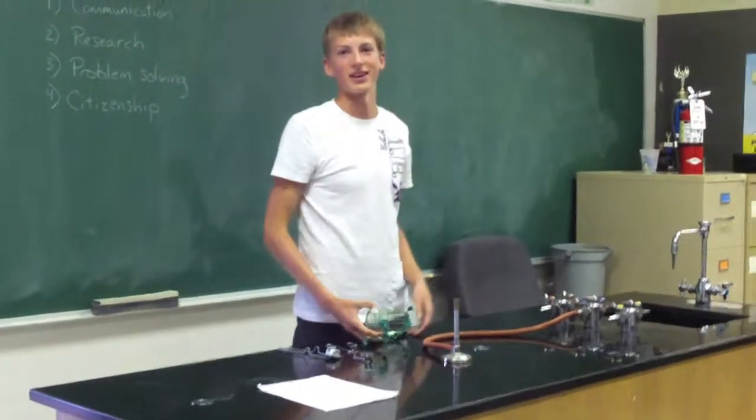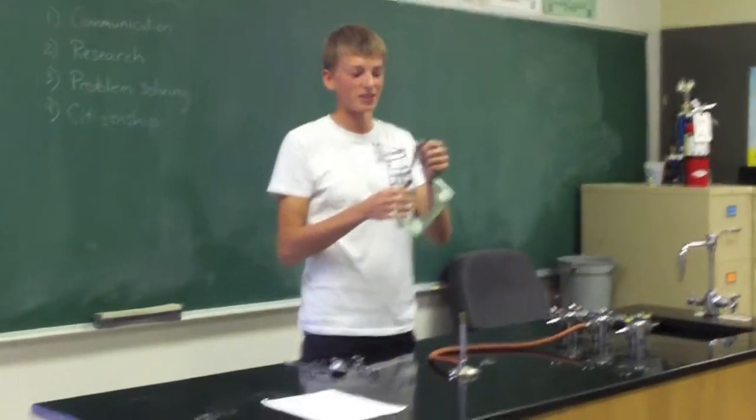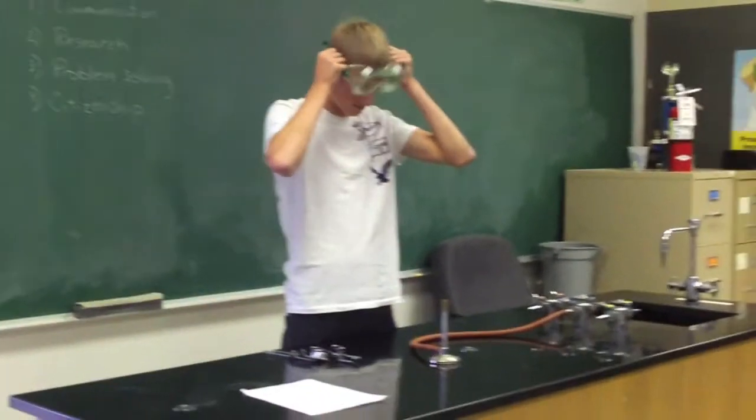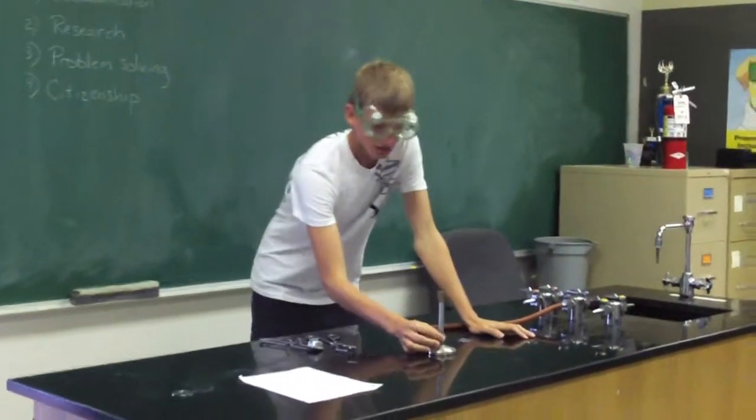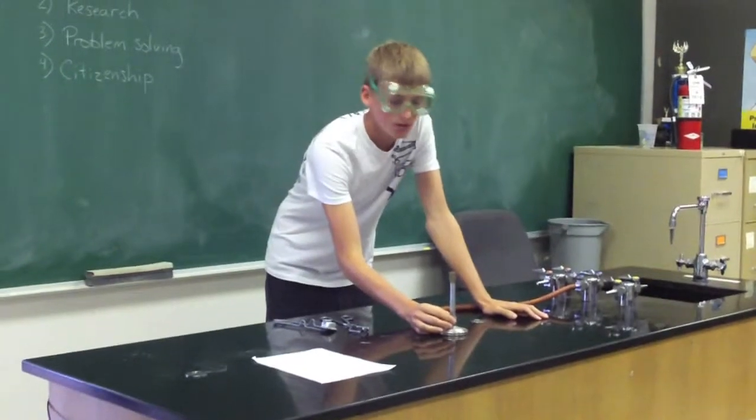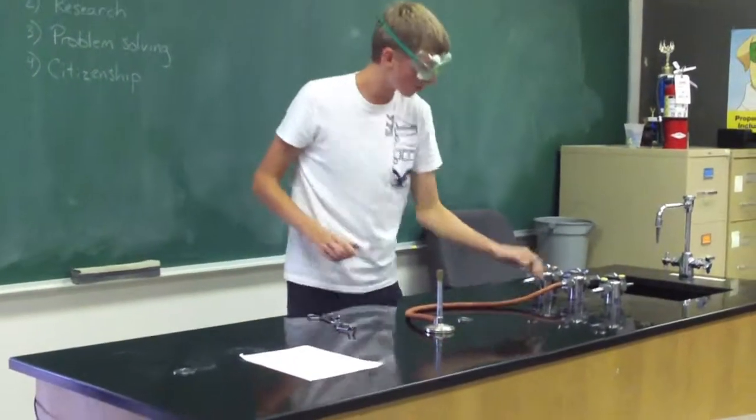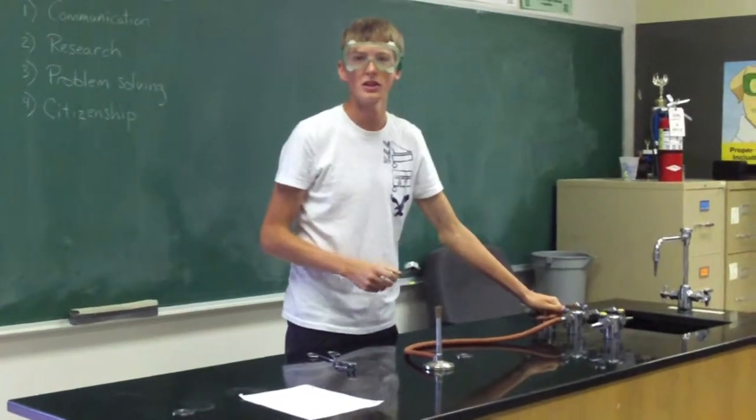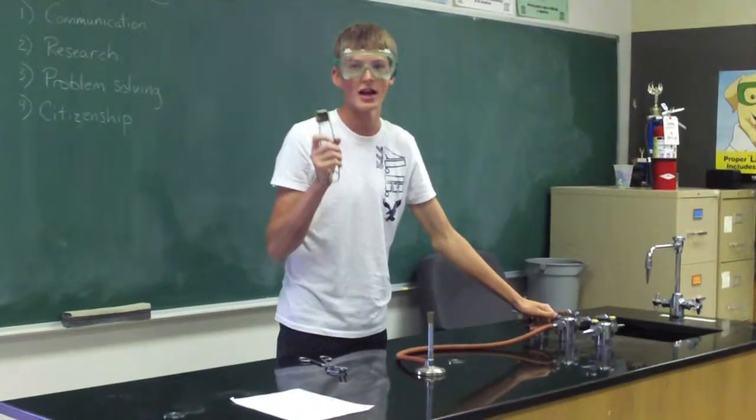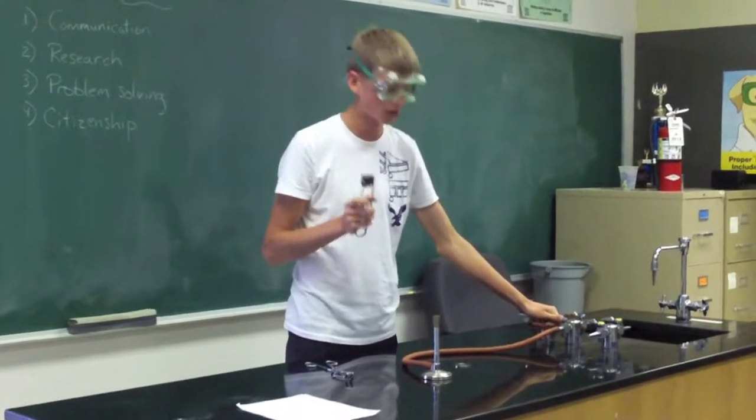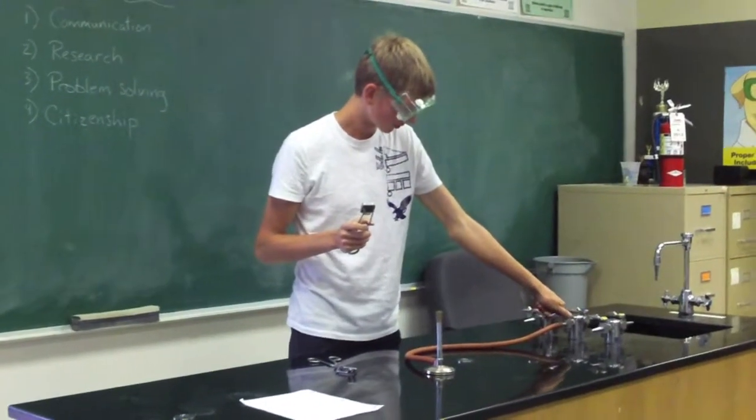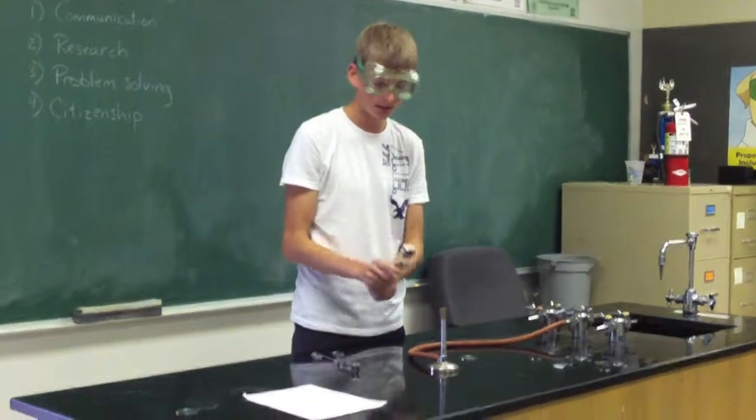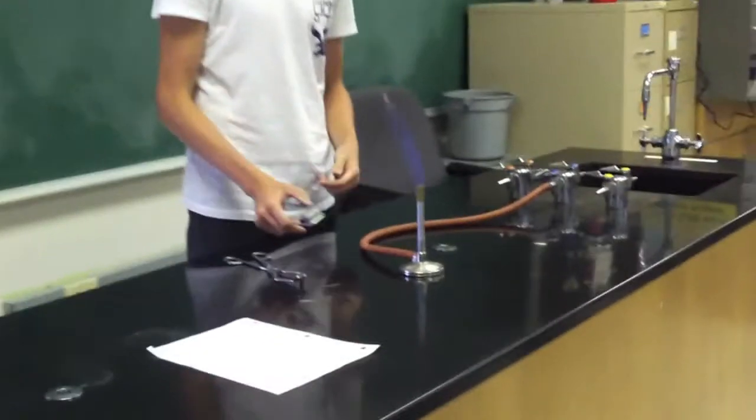Lighting the Bunsen burner. We're going to put our goggles on for safety. We're going to make sure that the air valves are closed, and then we're going to turn on the gas. You want to turn on the gas until you can hear it hissing out of the Bunsen burner, and that's when you know to start igniting it. I can hear it, my hand's to the side, and I've ignited the Bunsen burner.